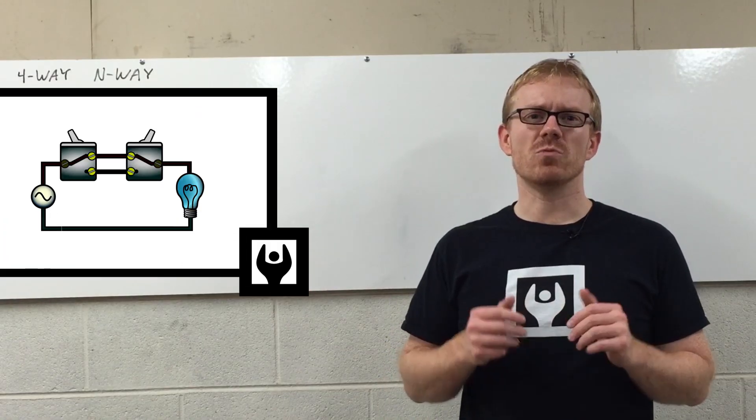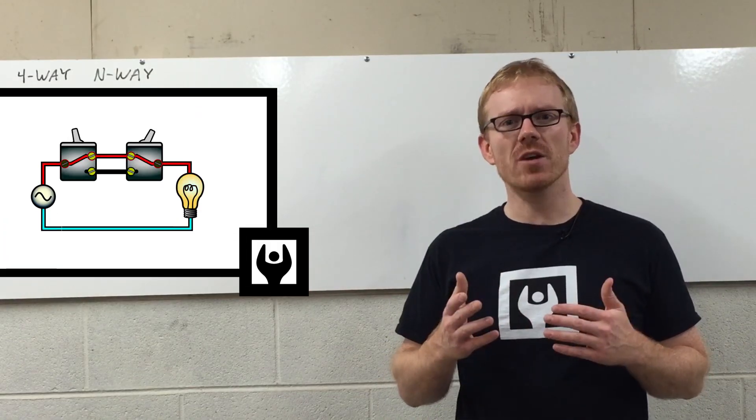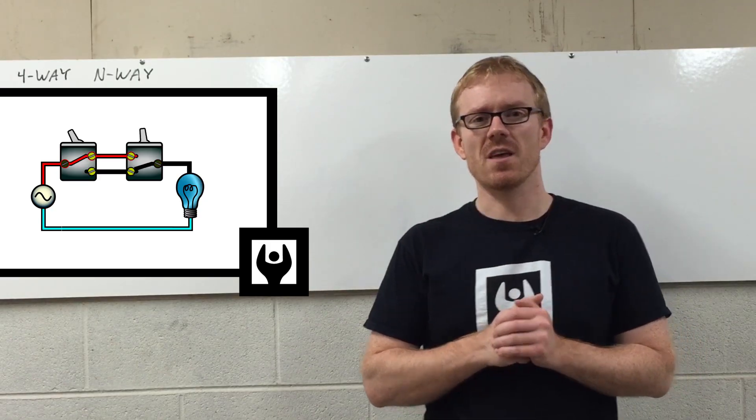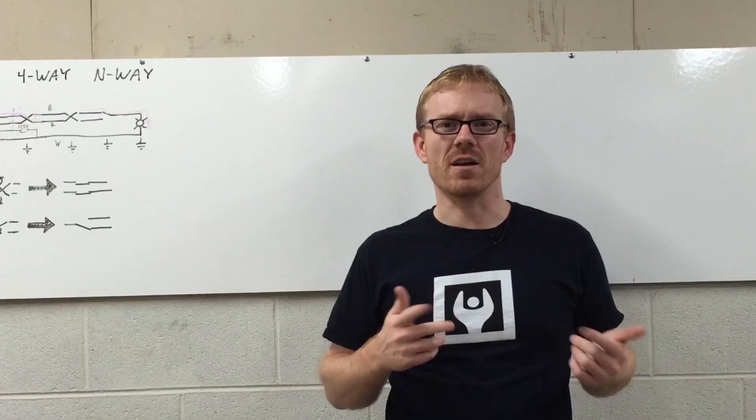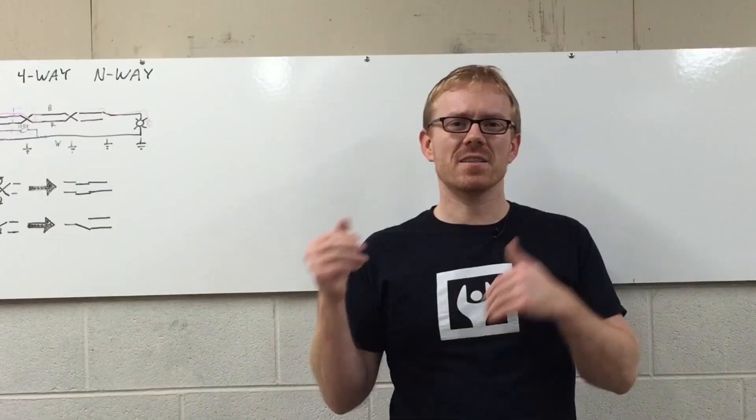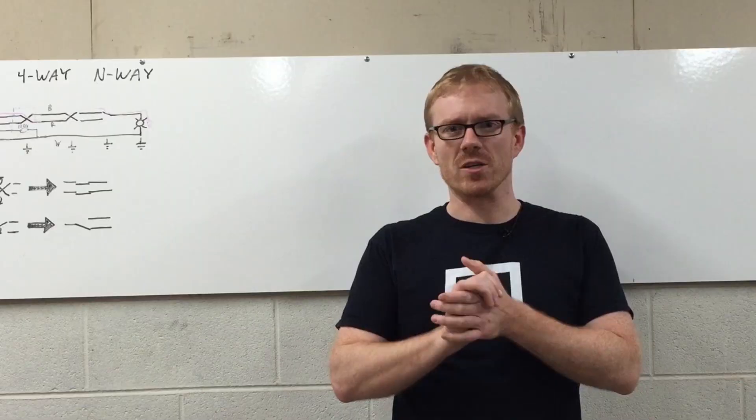Multi-way switching is used when you want to be able to turn on or off a load, such as lights, from multiple locations. For instance, in my garage, I can turn on and off the lights from over next to the staircase and by the garage door openers.